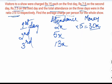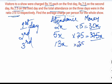On the second day, the attendance is 5x and the charge is ₹7.5 per person, so 5x × 7.5 = 37.5x — that is the money collected on the second day. On the third day, the attendance is 13x and the charge is ₹2.5 per person, so 13x × 2.5 = 32.5x — that is the money collected on the third day.